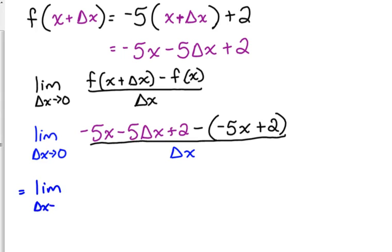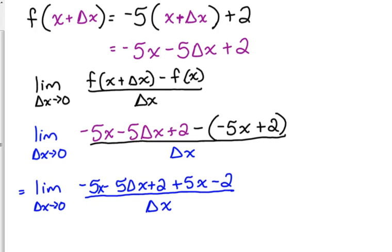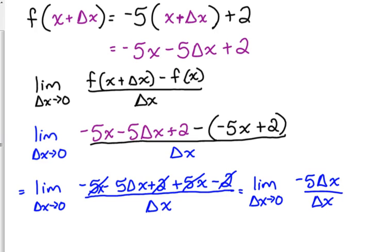Let's simplify. That requires distributing that negative, so we get +5x − 2. Please do not forget to distribute it to the 2 as well. The 5x terms cancel, the 2s cancel, and we're left with the limit as Δx approaches 0 of negative 5Δx over Δx. The Δx's cancel.